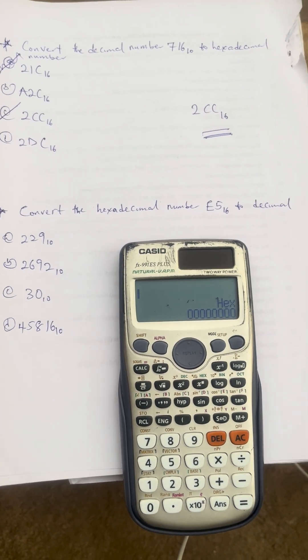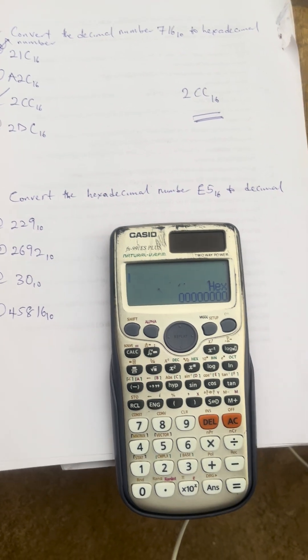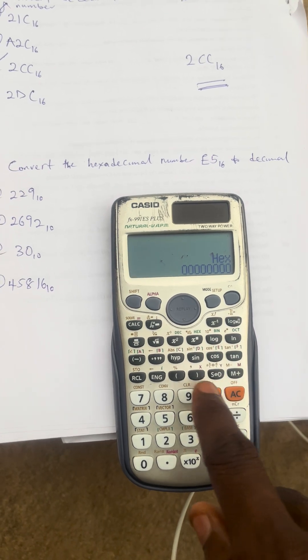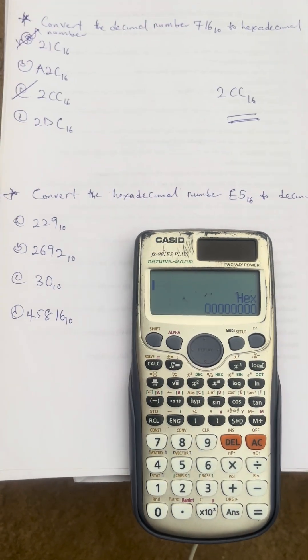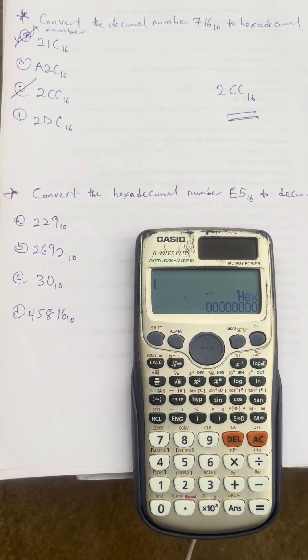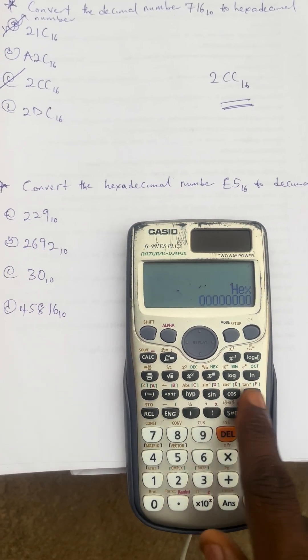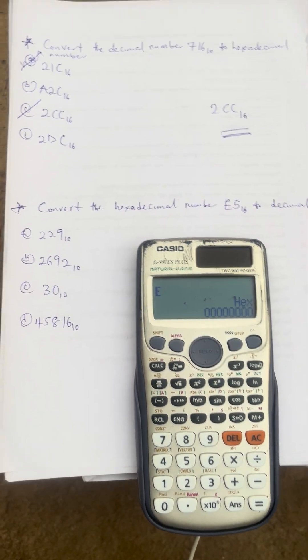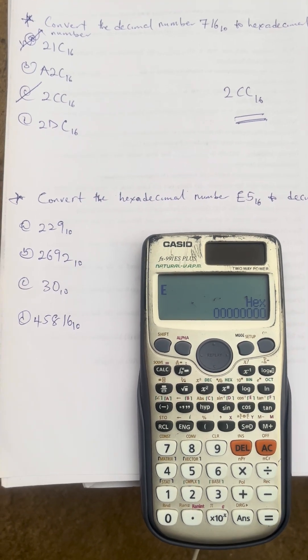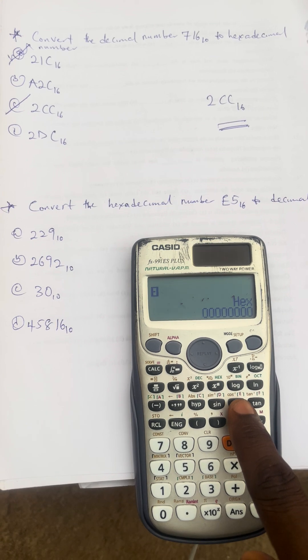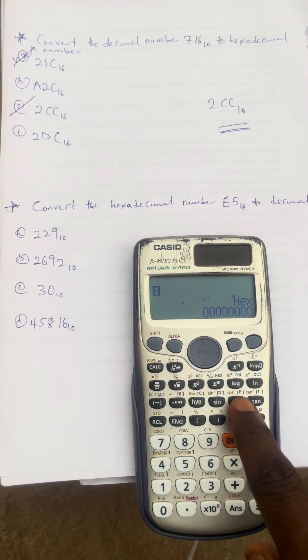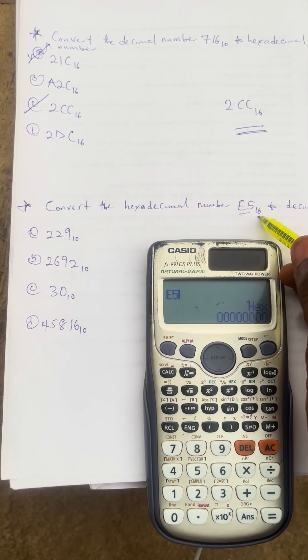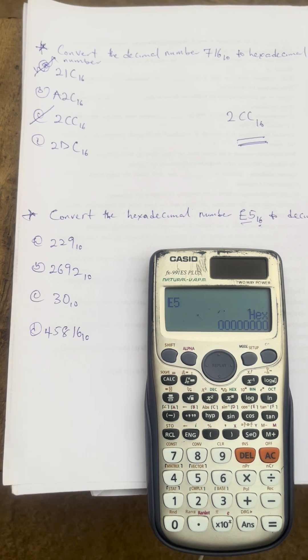Now when you press the button of X, then say E5, E5 is what we have to convert. Now if you observe on your calculator here we have alphabet A, B, C, D, E, F. This is the E, F, you don't need to press alpha. The alphabet we have there is E, just press alphabet E, you don't need to press alpha. Then press your 5.